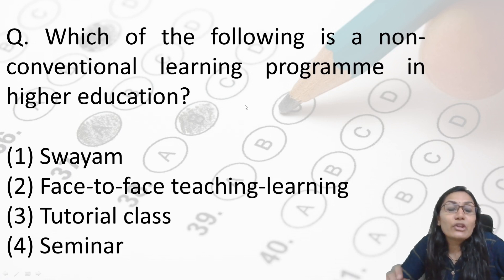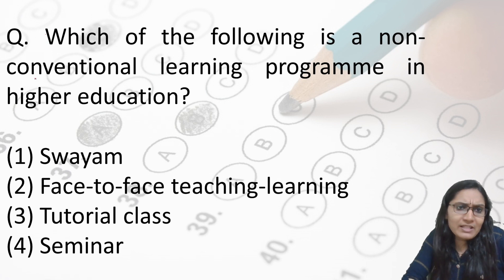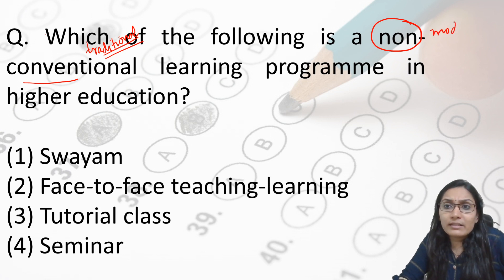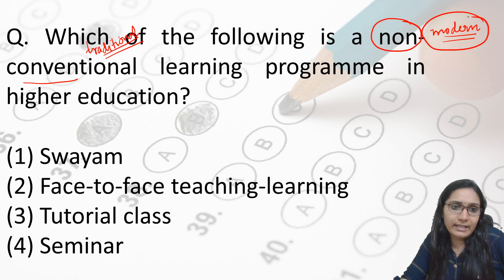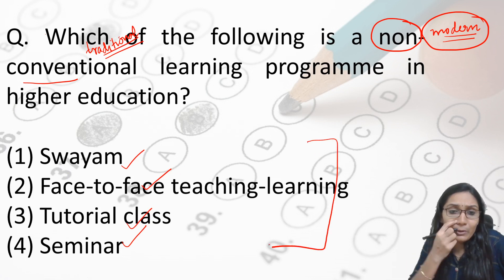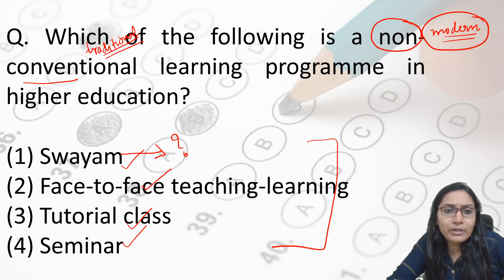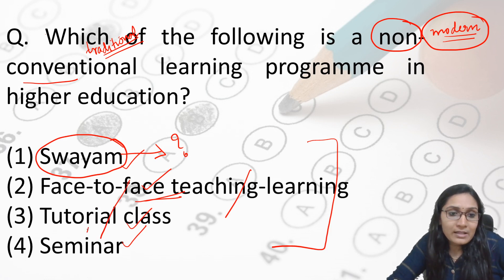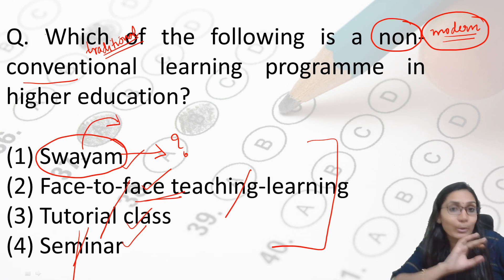Which of the following is a non-conventional learning program in higher education? Non-conventional means modern, not traditional. Options: Swayam, face-to-face teaching, tutorial class, seminar. If you don't know what Swayam is, apply elimination. Face-to-face teaching is traditional — eliminate it. Tutorial class is traditional — eliminate it. Seminar is traditional — eliminate it. So even without knowing Swayam, you arrive at the answer: Swayam, because all other options are traditional learning methods.